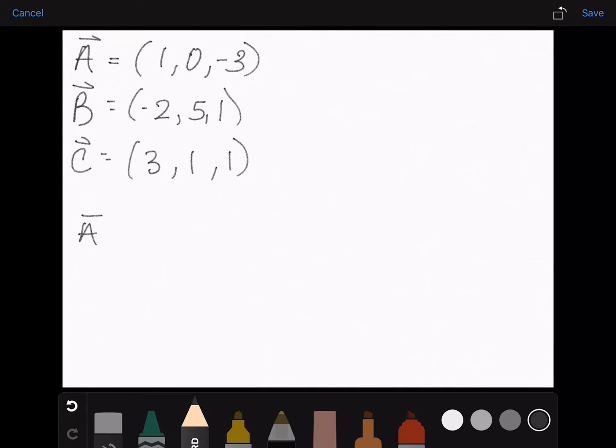A minus B? When you're adding or subtracting vectors, you just subtract and add the components. So for A minus B we will